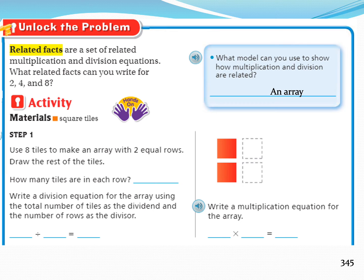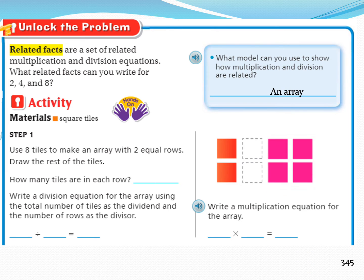Step 1: Use 8 tiles to make an array with 2 equal rows. Draw the rest of the tiles. Let's draw them together. We have 4 tiles, and we will draw 4 more. How many tiles are in each row? 4 tiles.